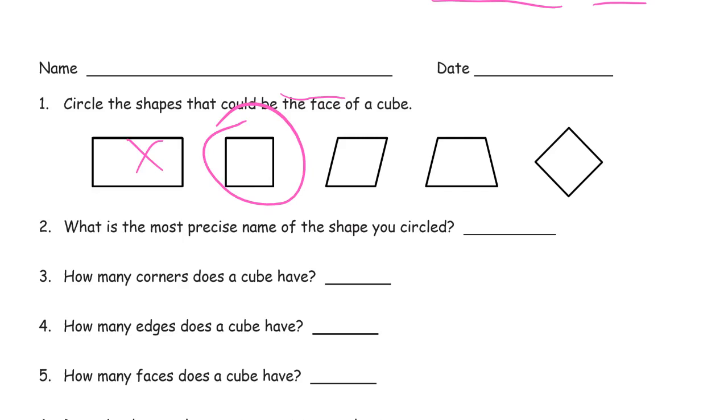But that's a square. And believe it or not, this is a square. I know a lot of times people look at that and think it's a diamond because it's on its corner, but it's just a square turned on its corner. It's still a square, so it could be the face of a cube.